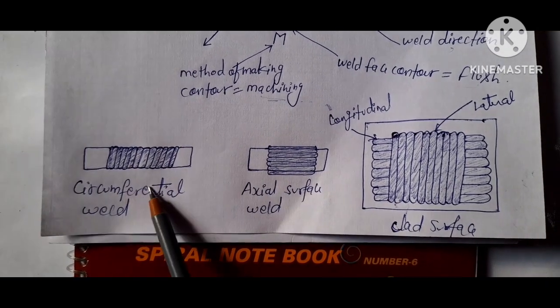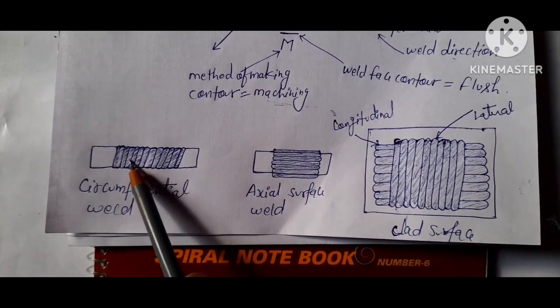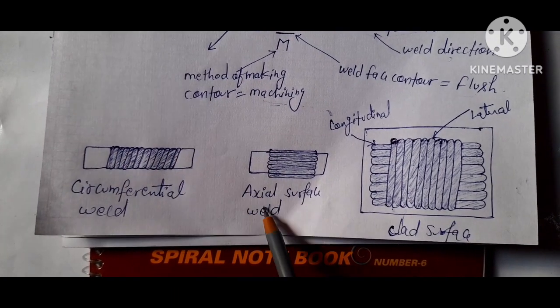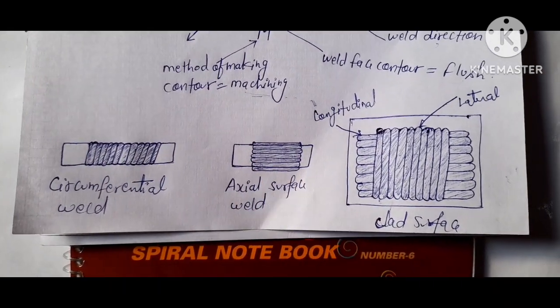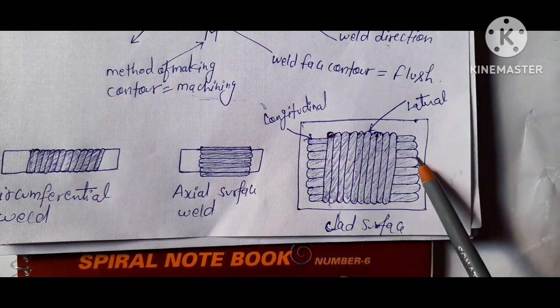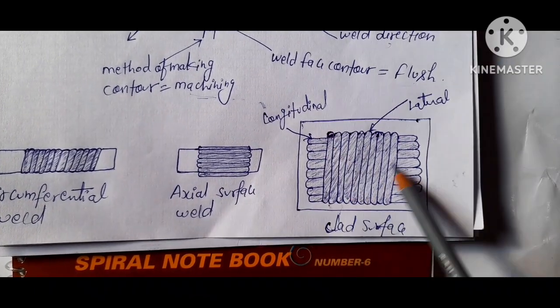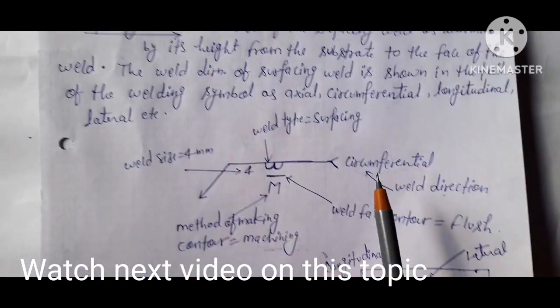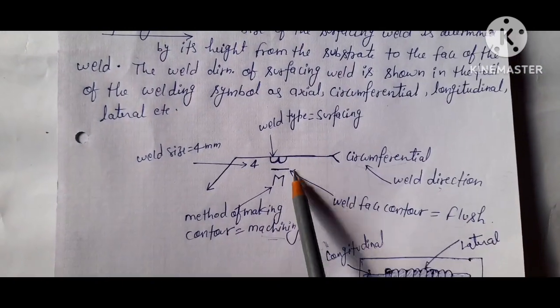This is a circumferential welding around the bar, and this is an axial welding around the bar. And this is longitudinal as well as lateral welding on this plate, clad surface plate. Okay, so this is a surfacing welding symbol.